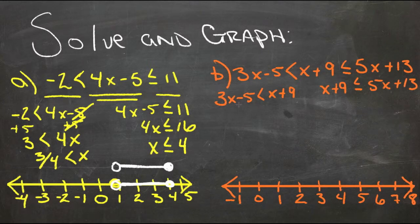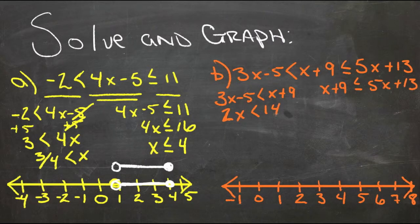So first we're going to combine all the x's on the side that starts with the most, so on the left. We'll subtract x from this side and add 5 to this side. Subtracting x from both sides gives us 2x is less than, and adding 5 gives us 14. Divide both sides by 2, and we get x is less than 7.